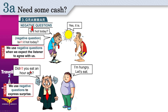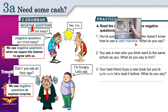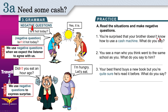Now practice: read the situations and make negative questions. You're surprised your brother doesn't know how to use a cash machine. 'Doesn't' is present simple, so use 'do' or 'does'. Since I'm talking to him — 'you' — I say 'Do you', then make it negative: 'Don't you know how to use a cash machine?'